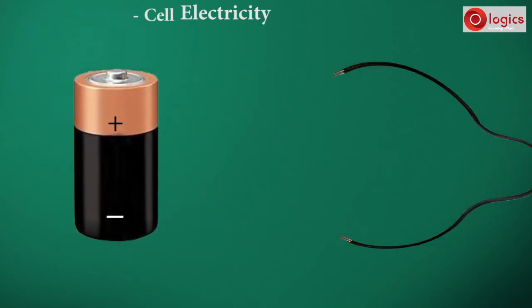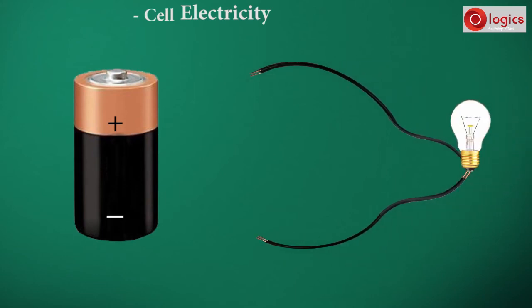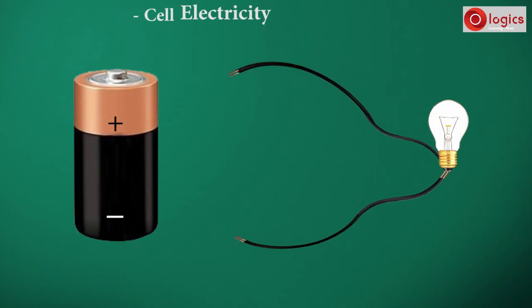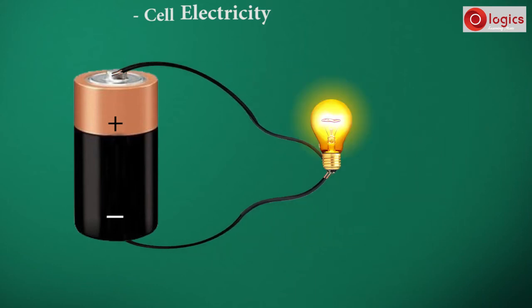This is an electric wire, and it has connected to an electric bulb. Now, using this wire, let us join the positive and negative terminals.